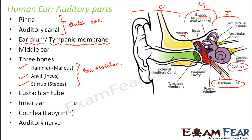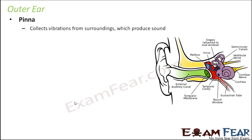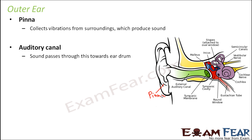Now let us look at each part in detail, starting with the outer ear. The outer ear is formed by the pinna and the external auditory canal. The pinna is the part of the ear visible from outside, and it is used to collect vibrations from the surroundings which produce sound. It is soft and flexible, allowing it to collect these vibrations. The auditory canal is a tube-like structure through which sound passes towards the eardrum.